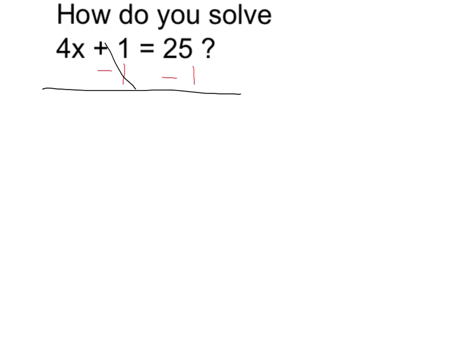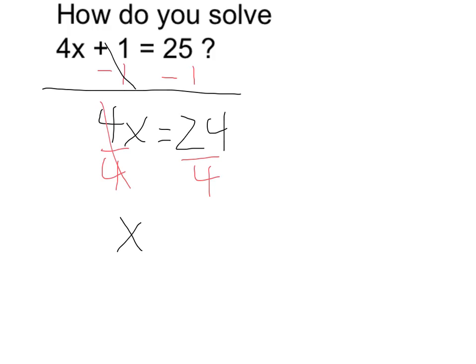Subtracting 1 on both sides gives me 4x equals 24. And now to get the x by itself, I can divide both sides by 4. Dividing by 4 gives me x is equal to 6.